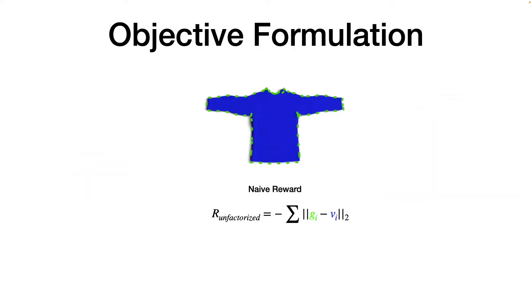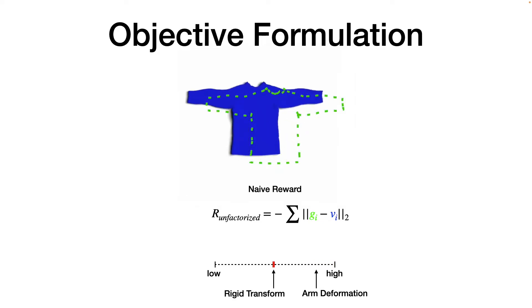Now, given this task, a naive objective formulation to learn is the negative distance between the goal and the current cloth configuration. However, deformations of small parts, like the shirt's arms, contribute very little to this term, while rigid transforms contribute a lot. This means that this reward emphasizes alignment much more than canonicalization.